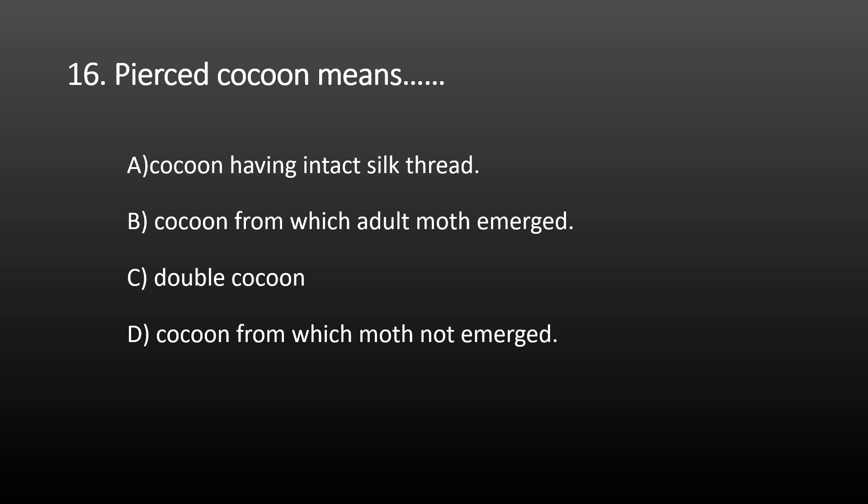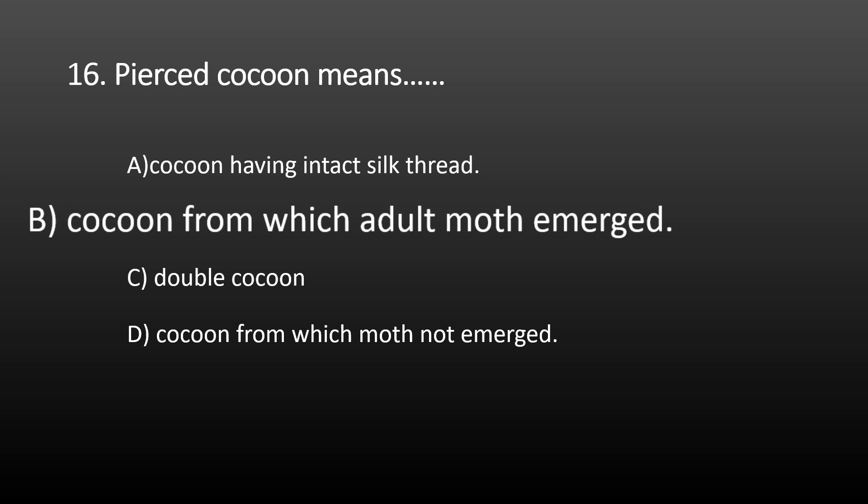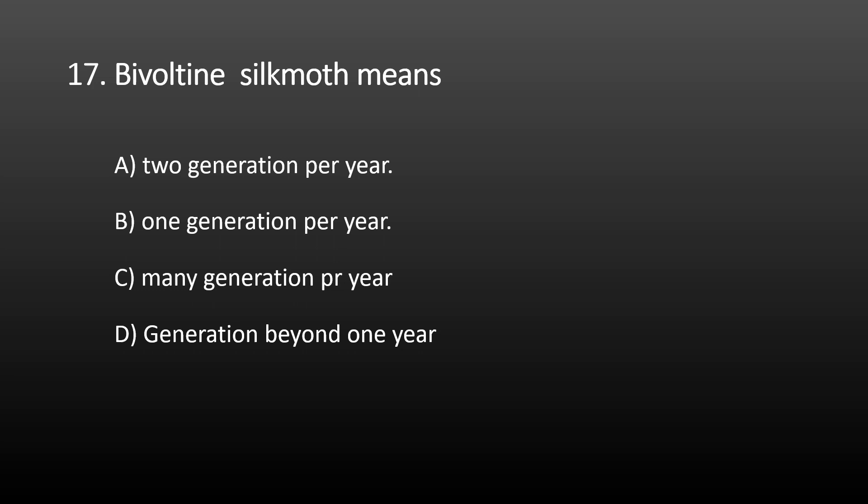Next MCQ: pierce cocoon means? Options are: A) cocoon having intact silk thread, B) cocoon from which adult moth emerges, C) double cocoon, and D) cocoon from which moth does not emerge. Pierce cocoon is a defective cocoon, and pierce cocoon means the cocoon from which the adult moth emerges. The correct option is B, cocoon from which adult moth emerges.